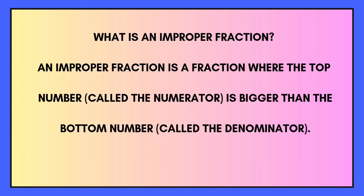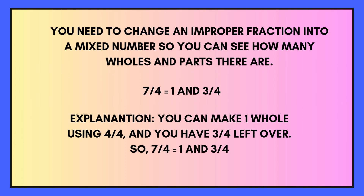What is an improper fraction? An improper fraction is a fraction where the top number, called the numerator, is bigger than the bottom number, called the denominator. You need to change an improper fraction into a mixed number, so you can see how many wholes and how many parts there are.